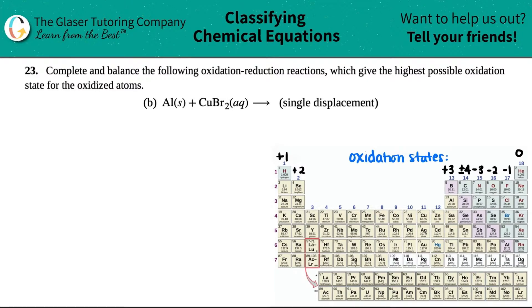Number 23, complete and balance the following oxidation reduction reactions, which give the highest possible oxidation state for the oxidized atoms. We need to make an equation that starts off with aluminum solid plus copper 2 bromide. That's aqueous.